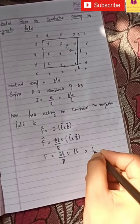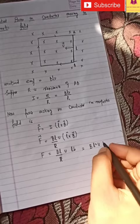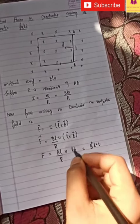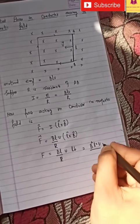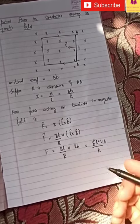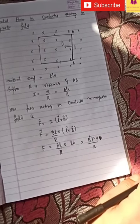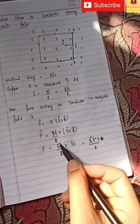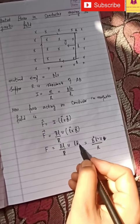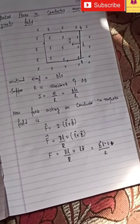So we can write it like this: L squared V. And B and B, that will become B squared. So this is B squared L squared V by R.